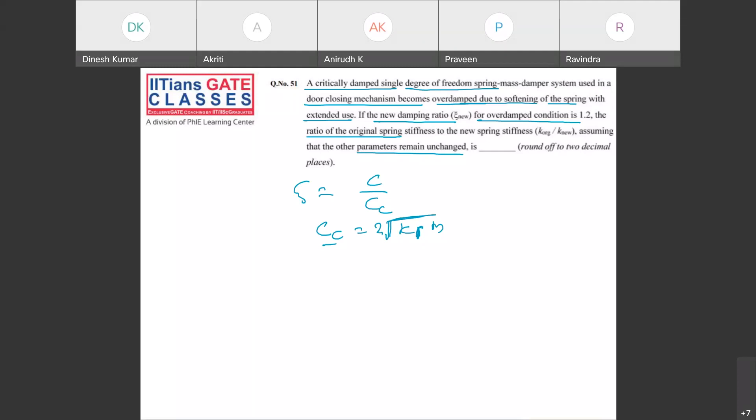So here it is K₁. In this case, zeta is 1, so you can say here your C₁ is equal to Cc, which is 2 square root K₁M. Now in case of the second case, zeta is 1.2, so it is C₂ upon Cc. C₂ is 1.2 times Cc.